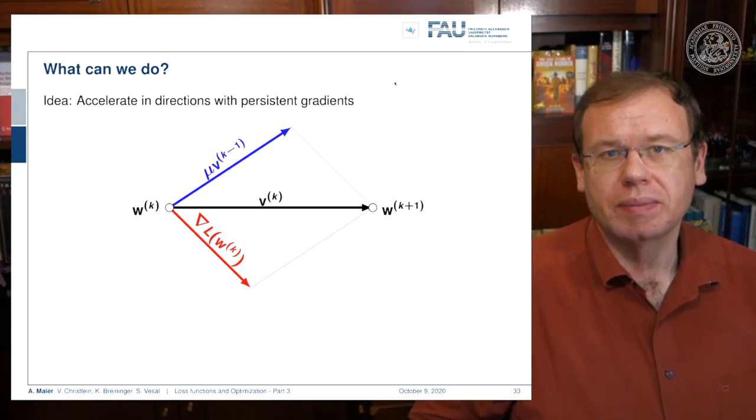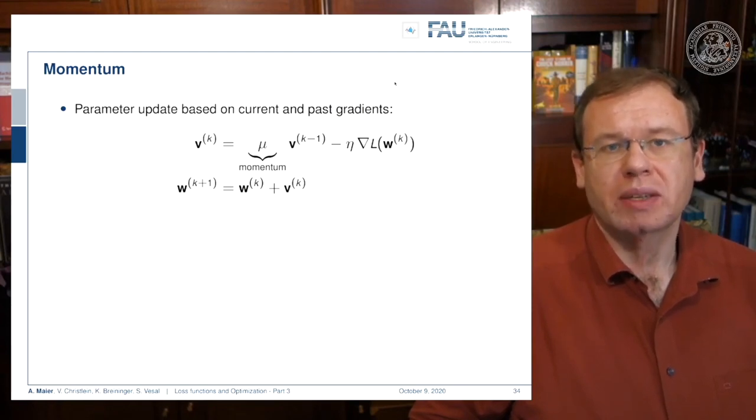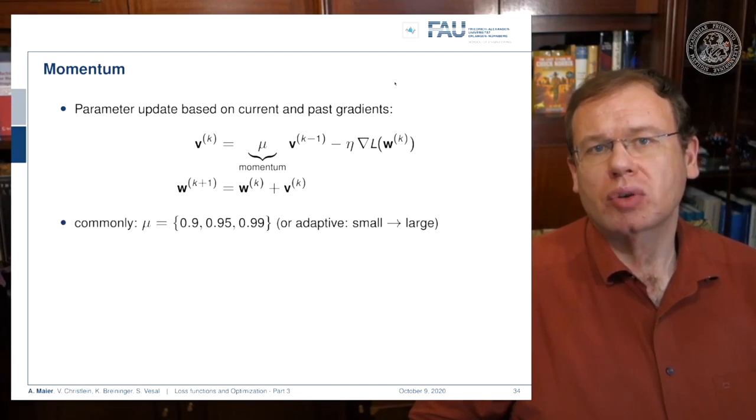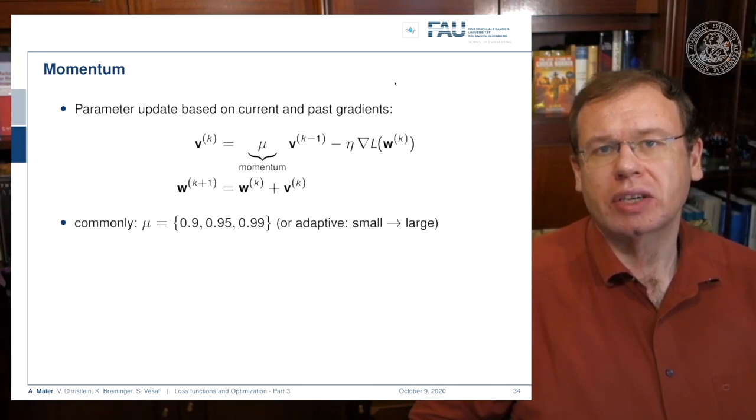This then gives you an updated direction, and this is typically called momentum. We introduce this momentum term where you add with a new weight some momentum that is indicated with v superscript k minus one. This momentum term is essentially computed in an iterative fashion where you iteratively update over the past gradient directions. You can essentially say by iteratively computing this weighted mean you keep a history of the previous gradient directions and you gradually update them with the new gradient direction. Then you pick the momentum term in order to perform the update instead of just the gradient direction.